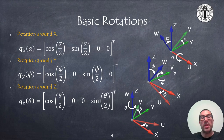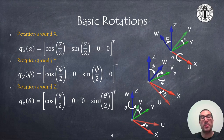Basic rotations are rotations along the axes of the reference system, that is, rotations around x, y and z axes. We can represent these rotations with quaternions using the angle-axis formula previously shown. With these basic rotations, we can perform rotation compositions to obtain any 3D orientation, as we will see.